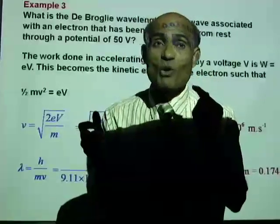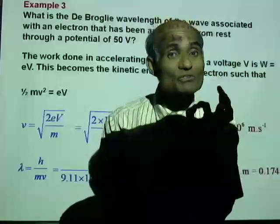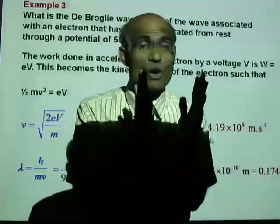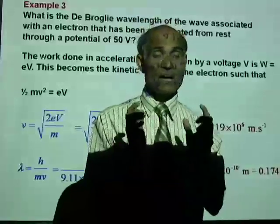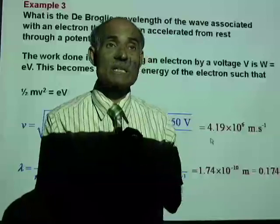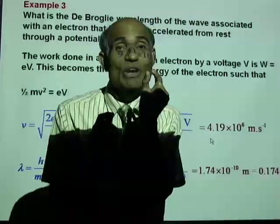But it is really not a small number when the size of the electron is taken into consideration. You see, if you want to compare that wavelength, which is 0.174 nanometer, with the diameter of an electron,